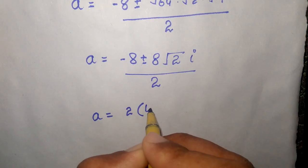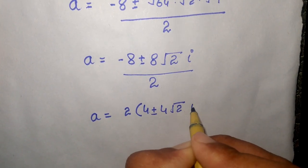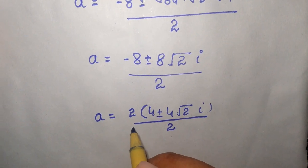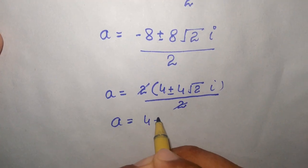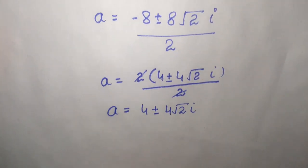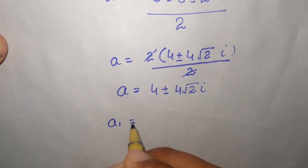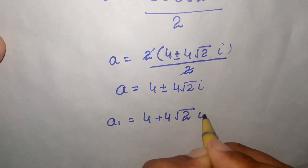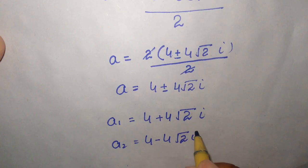Taking 2 as a common factor from the numerator: 2 times (4 plus or minus 4 square root of 2 i), divided by 2. The 2's cancel, giving a equals 4 plus or minus 4 square root of 2 i. So a1 equals 4 plus 4 square root of 2 i, and a2 equals 4 minus 4 square root of 2 i.